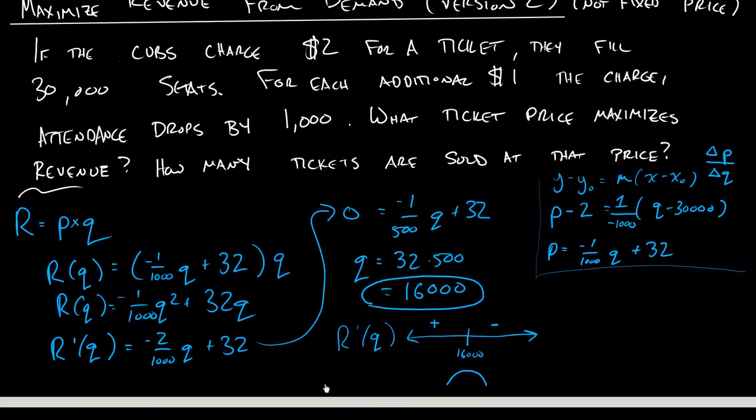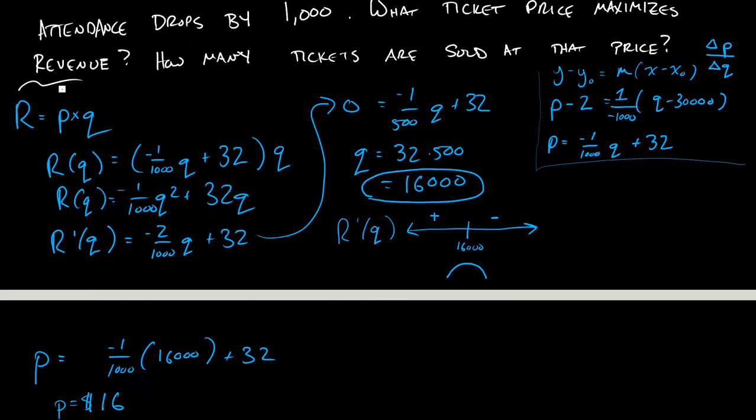So the big idea was to just start with this revenue equals price times quantity. And then get price in terms of quantity from the information they gave us. And then get the derivative, set it equal to 0 to get your maximum point. Thanks for joining the video.